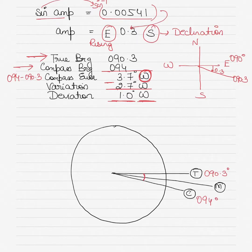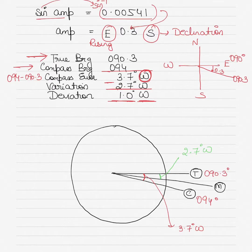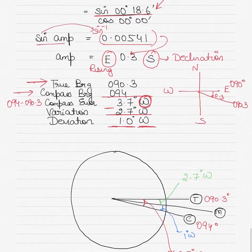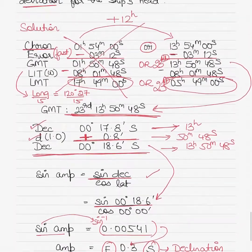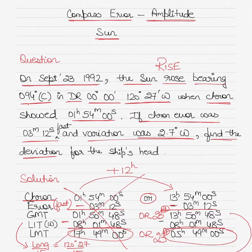Conceptually: the true bearing is 090.3°, the compass bearing is 094°, so the total compass error of 3.7° west means the compass lies to the west of true. Variation of 2.7° west is the angle between true and magnetic north. Deviation, the angle between compass and magnetic, is 3.7 minus 2.7 = 1 degree west. Understanding these relationships conceptually is key to solving compass error problems using the amplitude method.